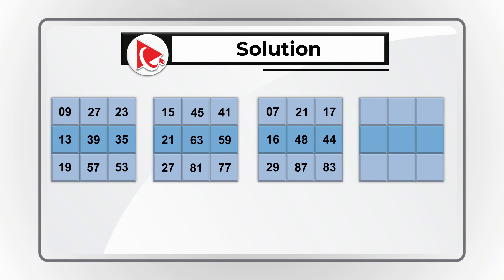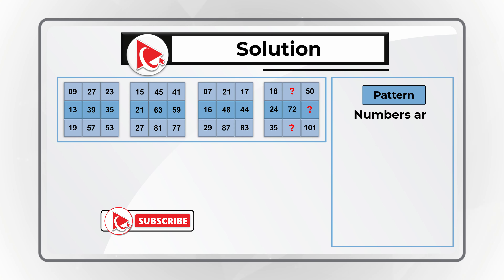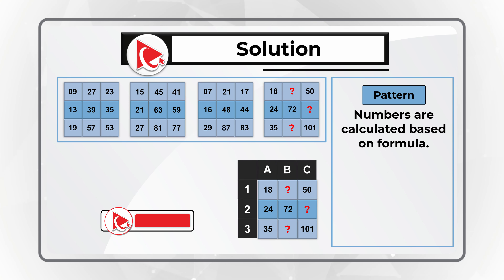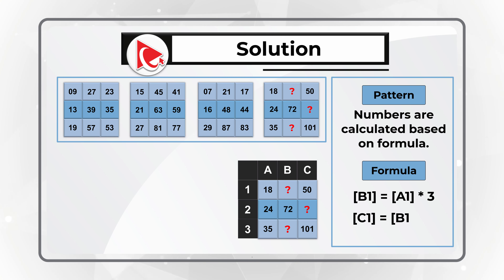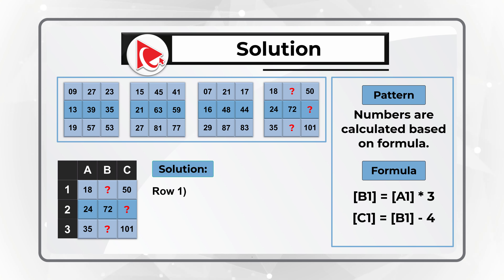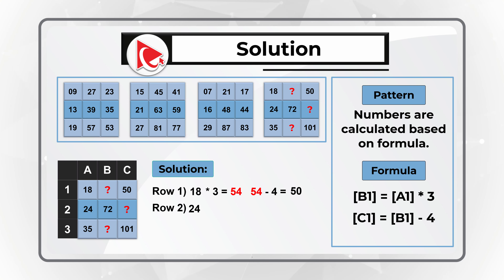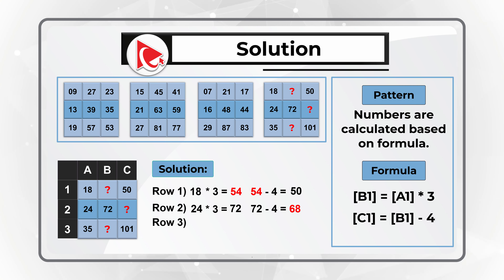The pattern is very obvious. Numbers are calculated based on a formula. Breaking down the matrix into columns A, B, and C with rows 1, 2, and 3: B1 is calculated as A1 multiplied by 3, and C1 is calculated as B1 minus 4. For row 1: 18×3 = 54, and 54−4 = 50. For row 2: 24×3 = 72, and 72−4 = 68. For row 3: 35×3 = 105, and 105−4 = 101.